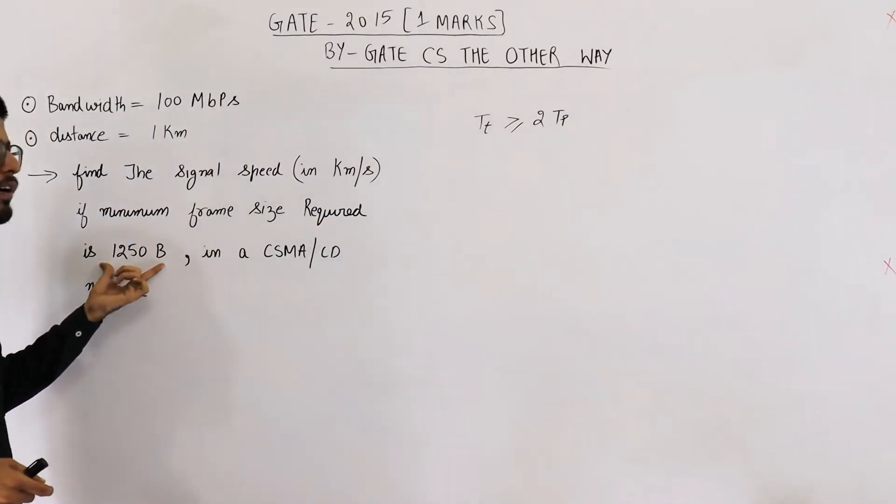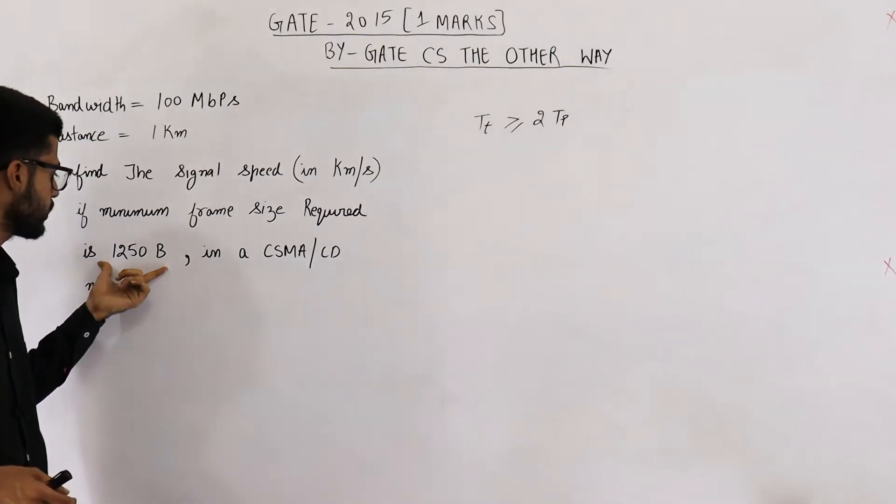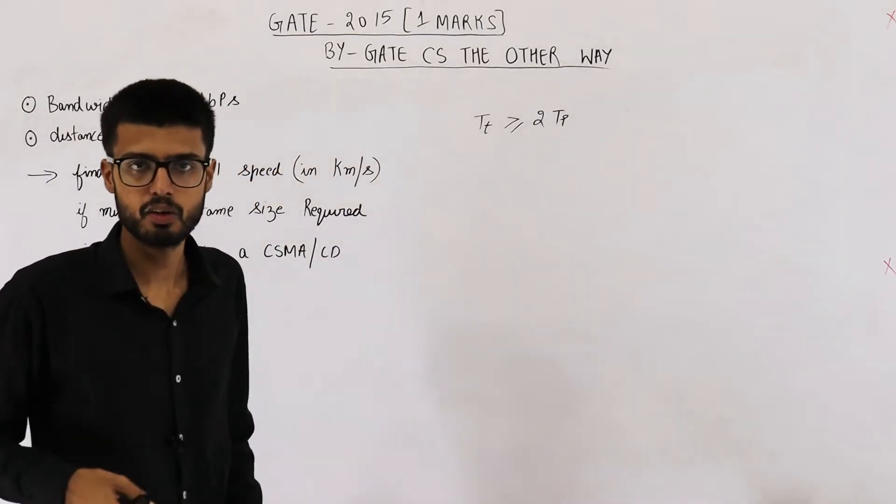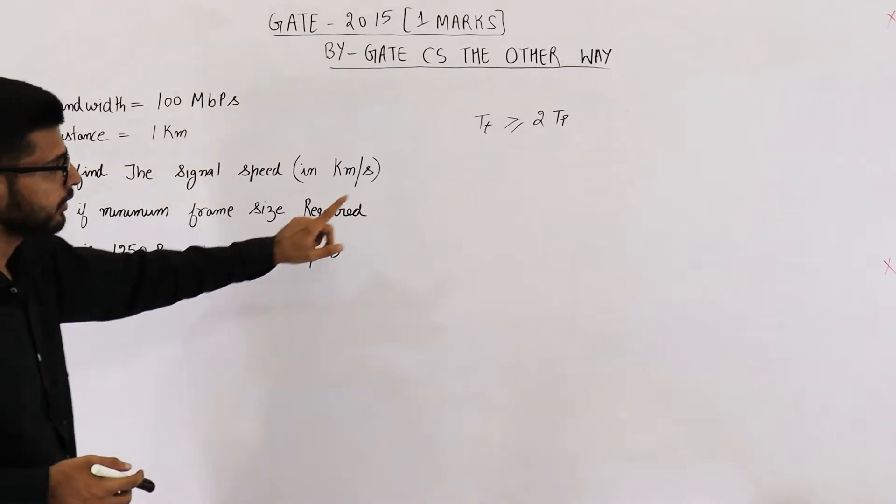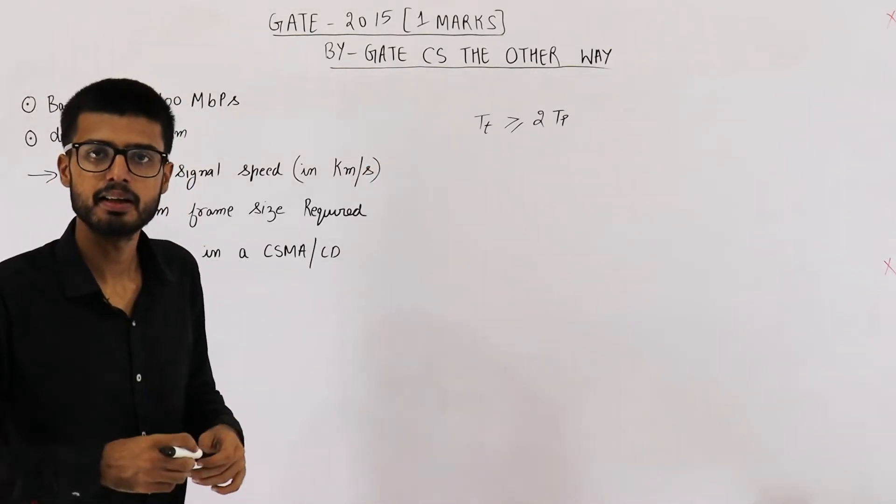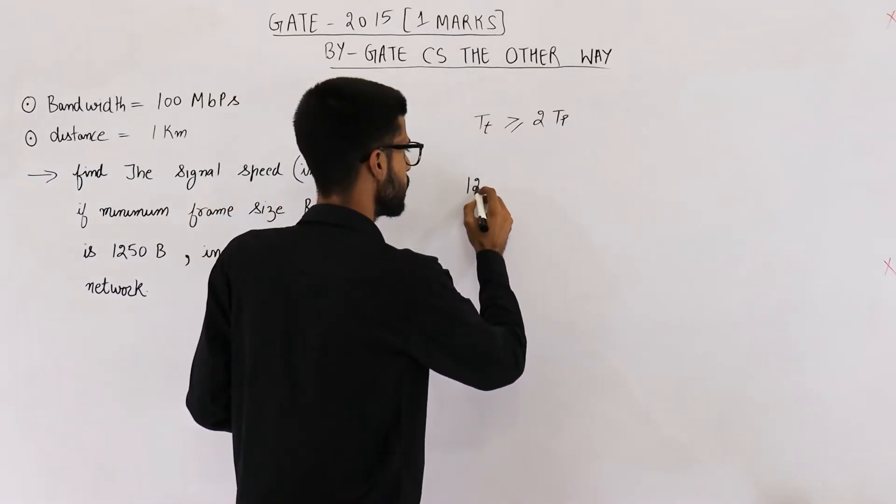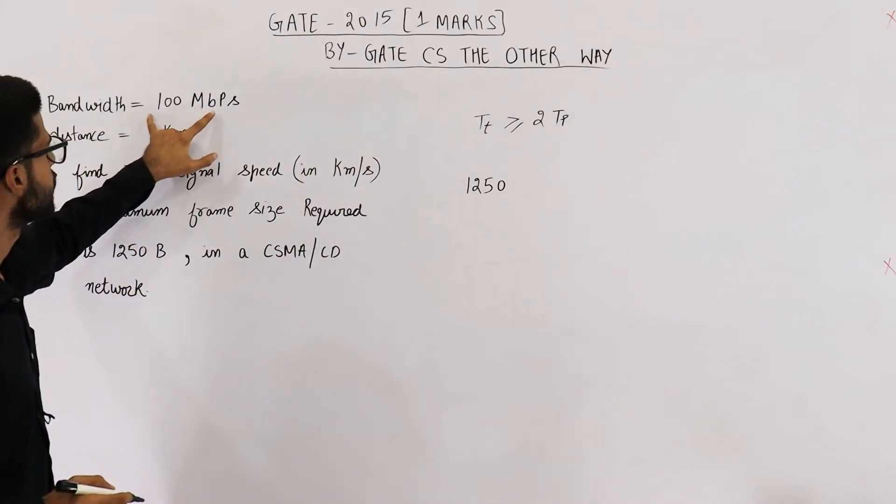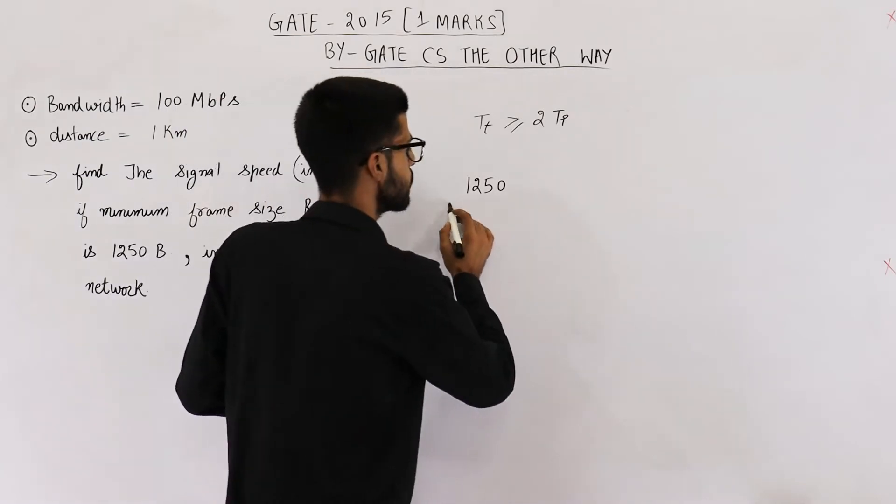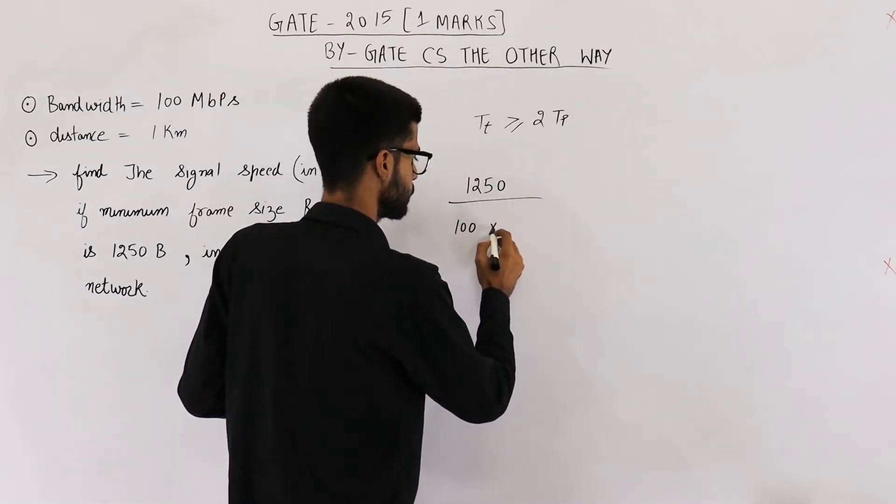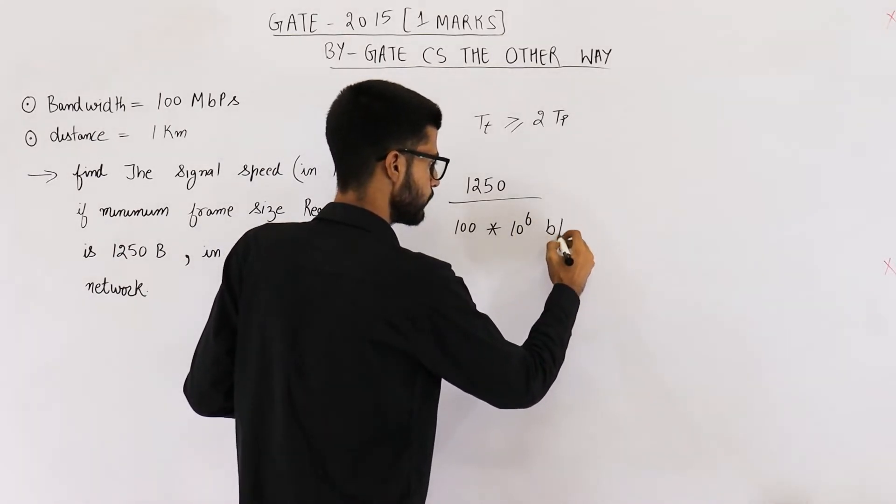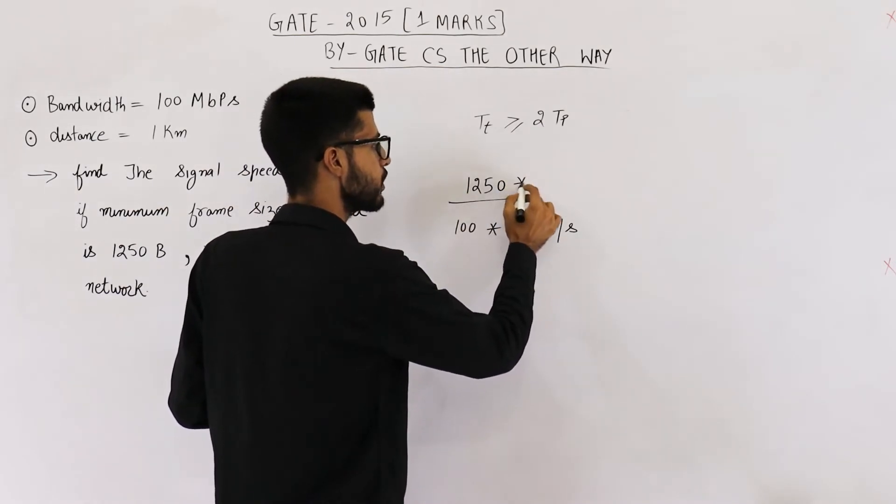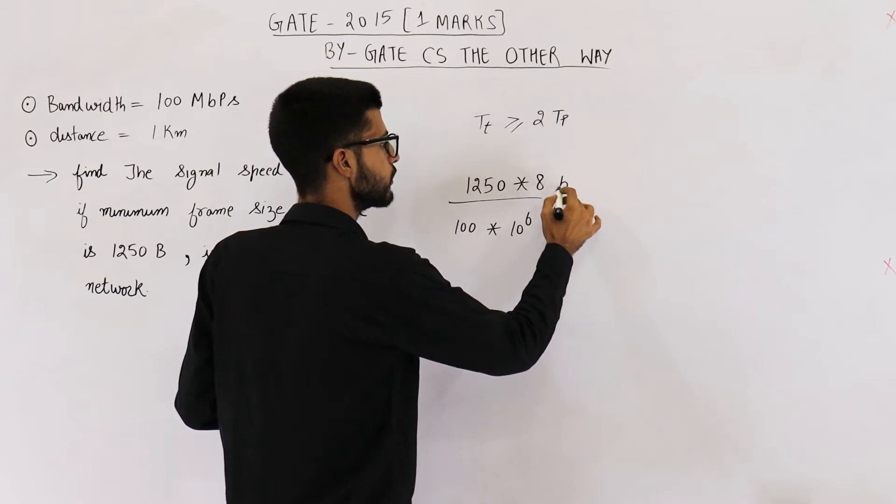Also, they are saying minimum frame size required is 1250 bytes. Now, if I substitute the value of minimum frame size in the formula of transmission delay, I will get the minimum value of transmission delay. TT is defined as length of the packet divided by bandwidth. Length of the packet is given as 1250 bytes, and bandwidth is 100 Mbps. Now, this is in bytes. This one is in bits. Let's convert length of the packet into bits.